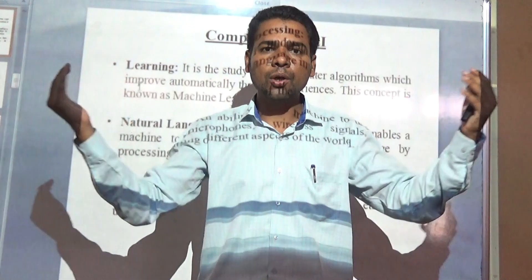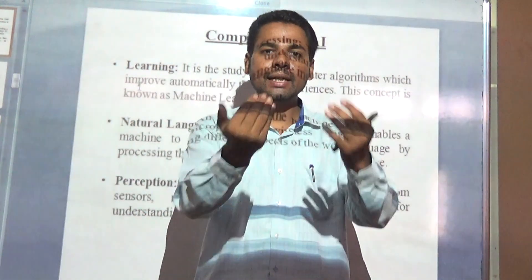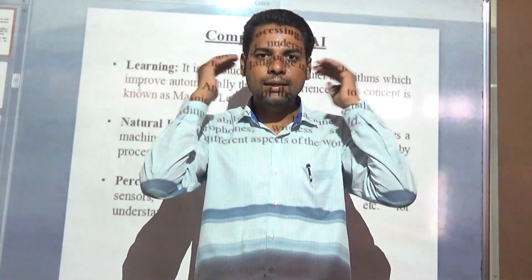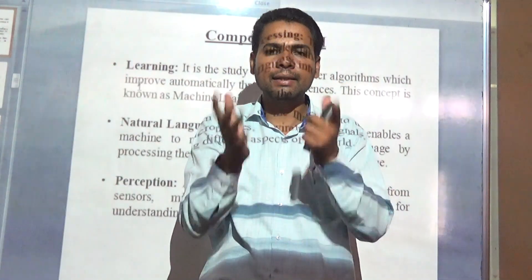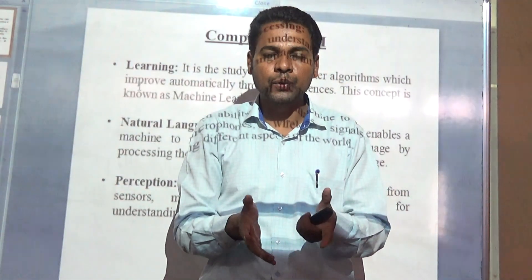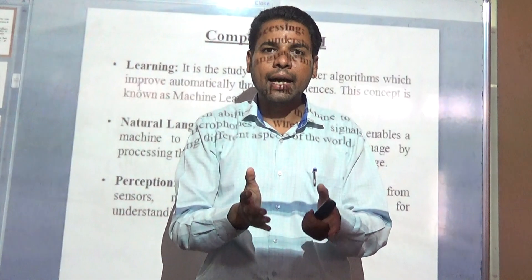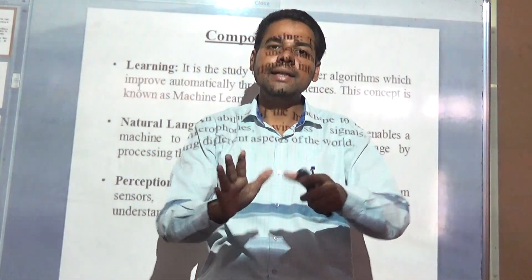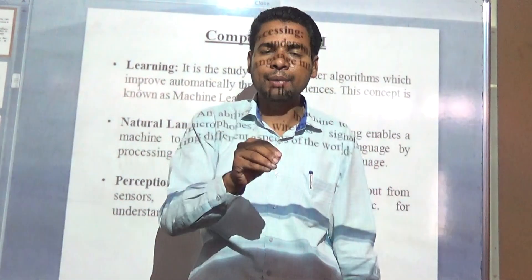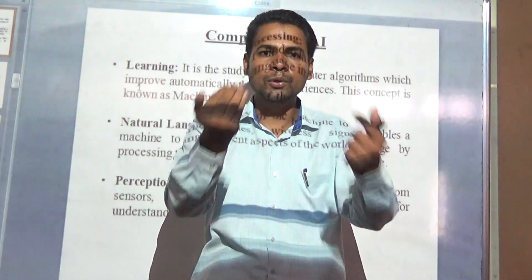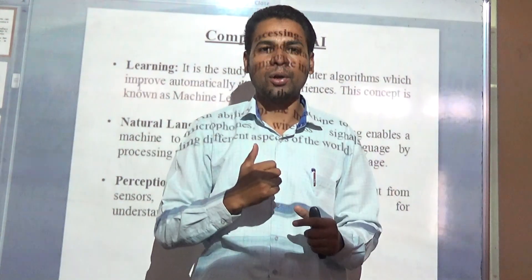Based on the input taken by these sensors, it goes to the brain, and then the brain processes those inputs and information. Based on that processing, it takes certain decisions. That means human beings take decisions based on input from various sensing organs.